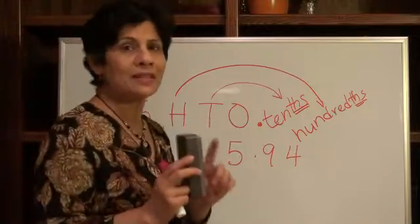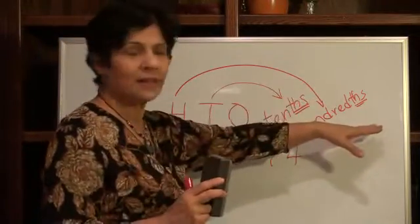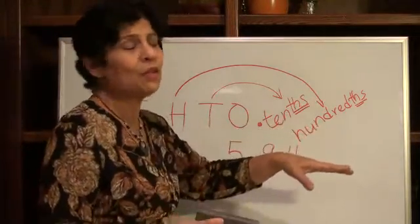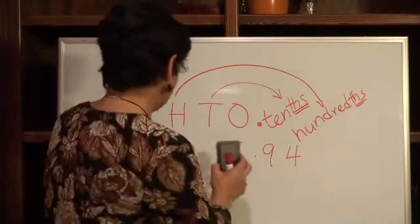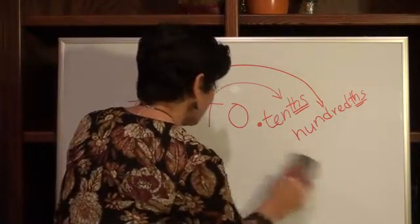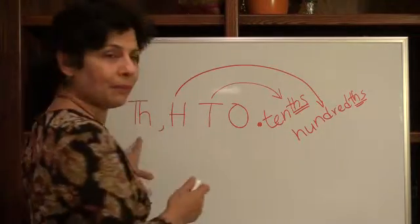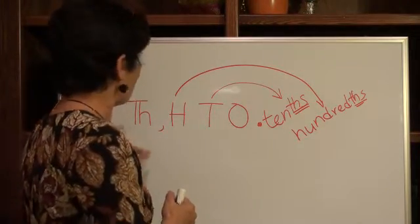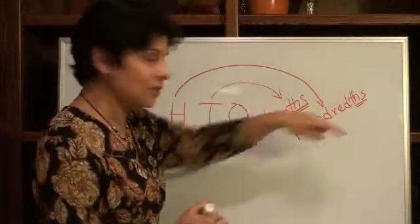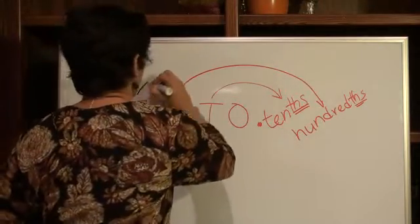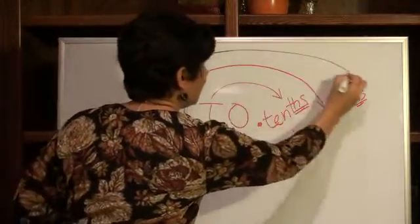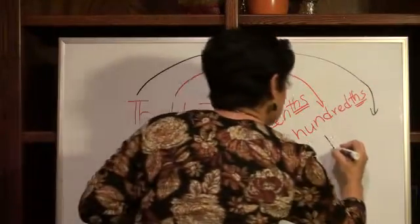And the last one we do is thousands. We don't want to go any further than that because in real life, we really don't use that much. Let's see. Erase this. And this time, let's go with him. That's thousands. He has a cousin called thousandths. So we go all the way across from here. And there is the thousandths.